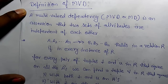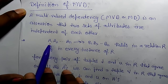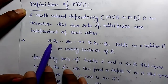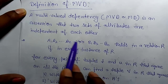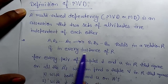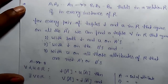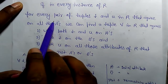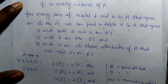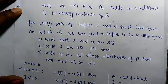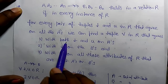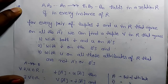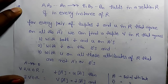The definition of multivalued dependency: a multivalued dependency is an assertion that two sets of attributes are independent of each other. If in a relation there is a set of attributes that multivalued-determines another set of attributes — denoted by a double-headed arrow — then for every pair of tuples T and U in R that agree on all A's, we can find a tuple V in R.